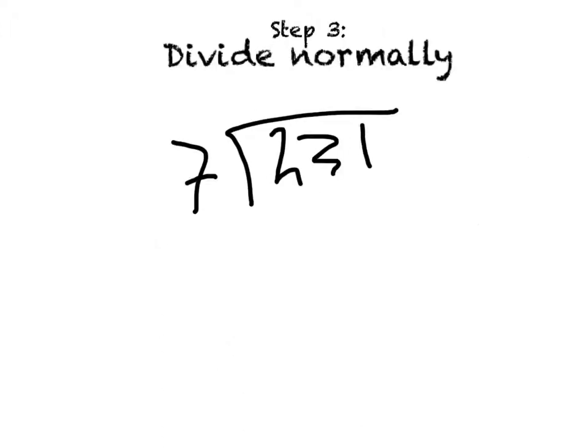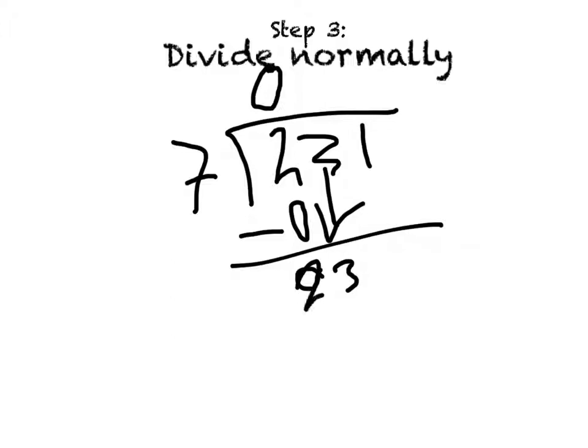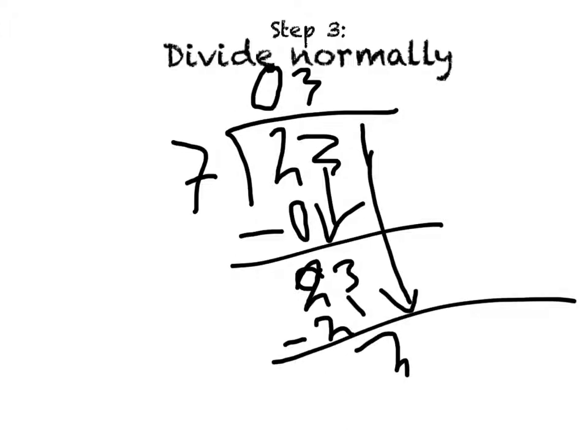Last but not least, step 3 is to divide normally. 7 divided into 231. 7 can't go into 2, so now you bring down the 3. Can 7 go into 23? Yes, it can go in 3 times. 23 minus 21 is 2. Bring down the 1. Then it can go in 3 times. 21 minus 21 is 0.